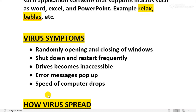Next topic is virus symptoms — signs that indicate our computer system is virus-affected. The first symptom is the computer starts doing things on its own, like moving the cursor randomly and opening and closing windows. Second, the computer may shut down and restart frequently. Third, certain drives on the computer become inaccessible. Fourth, unexpected error messages pop up, and the speed of the computer drops.